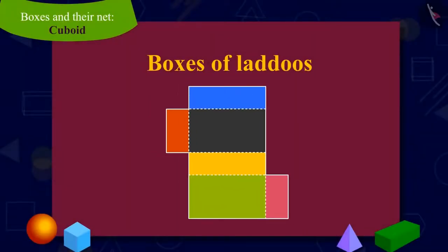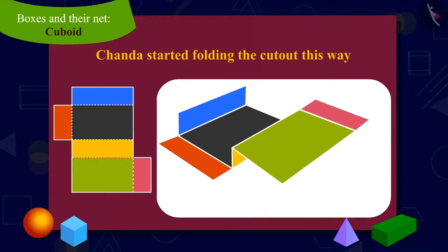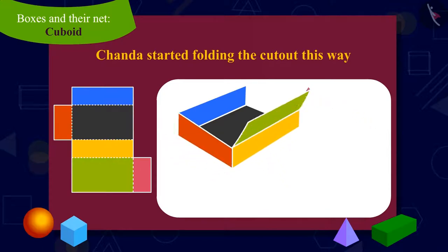Appu showed Chanda a cardboard cutout. He asked Chanda to fold the cutout on the line with dots on it. Chanda began to fold the cutout in this manner.